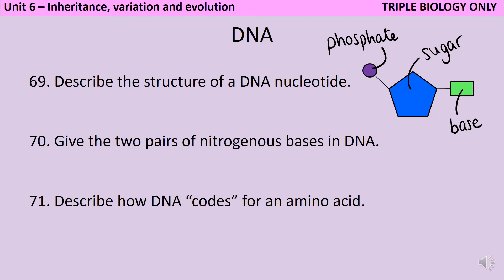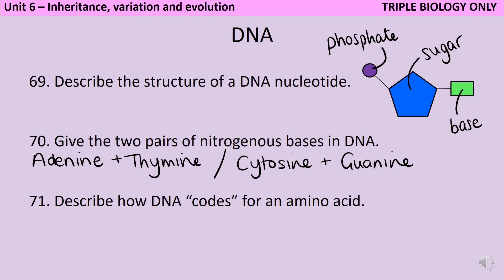There are four bases that you need to know about. Adenine pairs with thymine, and cytosine pairs with guanine. Although for the GCSE exams, you are allowed to just use the single letter codes: A and T go together, and C and G go together. When we say that DNA codes for an amino acid, what we mean is that those nitrogenous bases come in groups of threes called codons, and it's possible for each one of those three-letter codes to represent an amino acid.